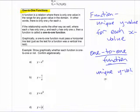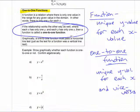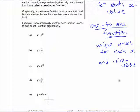A one-to-one function has a unique y value for each x, and vice versa — if the relationship works the other way as well. If I draw a curve as a function here, this is a function, but it's not one-to-one.